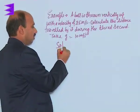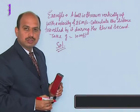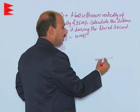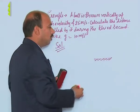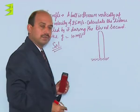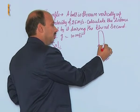For this question, you analyze the motion. Suppose this is the ground level. The ball is thrown vertically up and then it comes down, so the path is actually like this.